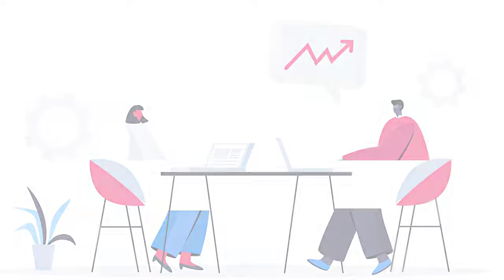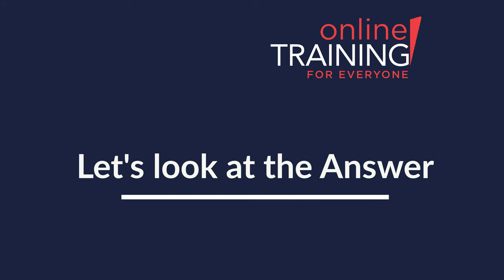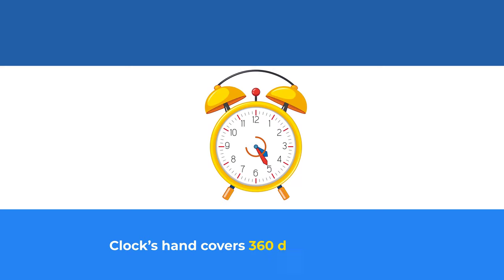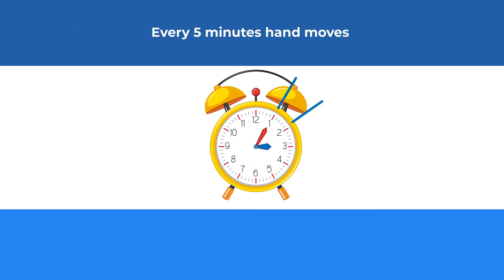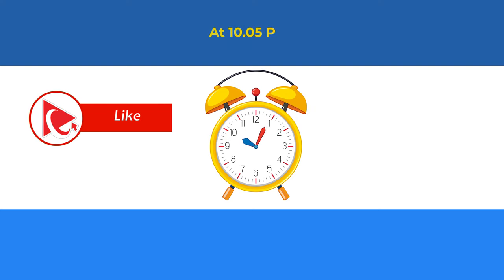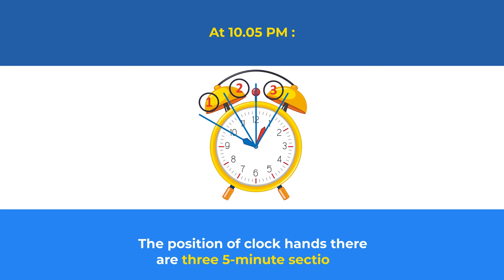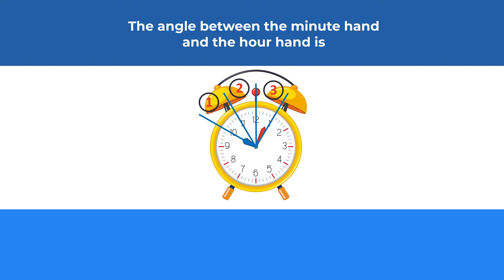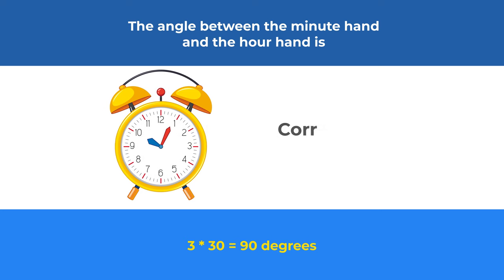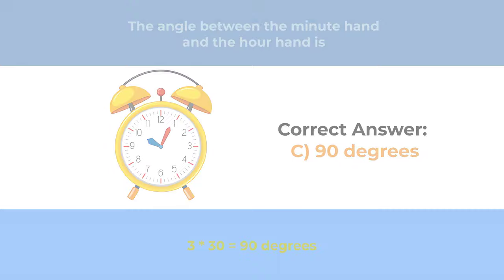Because a clock's surface is a circle, the clock hand covers 360 degrees in 12 hours. There are 12 five-minute sections on the clock, and every five minutes the hand covers 30 degrees, calculated as 360 degrees divided by 12, which equals 30 degrees. At 10:05 PM there will be three five-minute sections between the hands, so the angle will be 3 multiplied by 30, which equals 90 degrees.